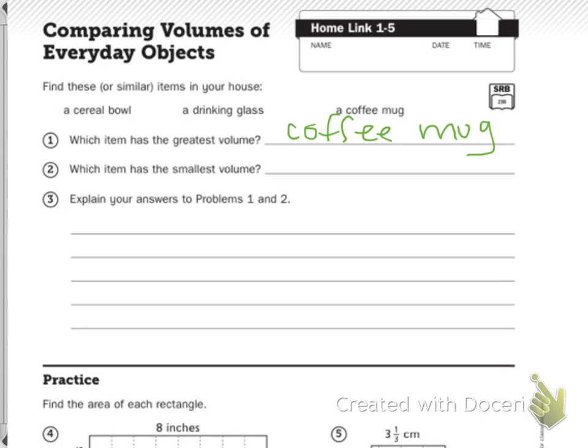Then it says which item has the smallest volume? Again this is your answer. Mine is the drinking glass I grabbed from the cabinet.